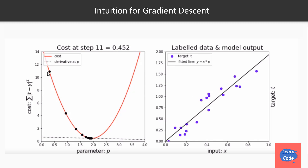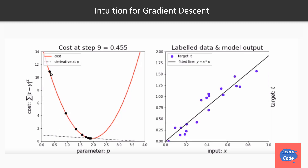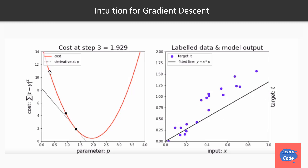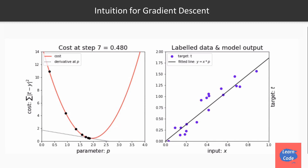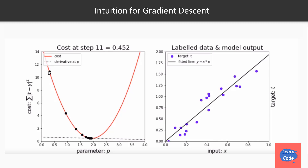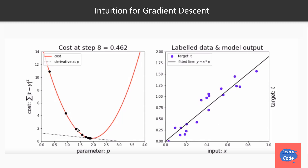From mathematics, we know that to get a slope at any point, we can take the derivative at that point. So we first take the slope or the derivative at this point, and then as we keep fitting the line, we keep reducing the cost function. Or you can say that as we keep reducing the cost function, the line gets a better fit. We reduce this cost function with the help of gradient descent.